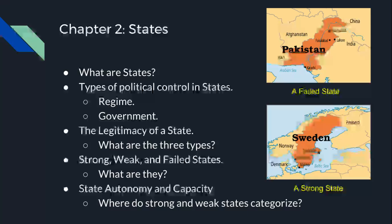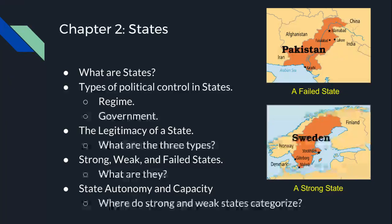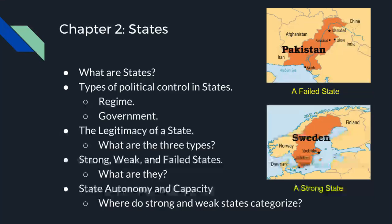When we get into the legitimacy of a state, it is the value whereby something or someone is recognized and accepted as right and proper. There are three different types: traditional, charismatic, and rational-legal. Traditional legitimacy is built by habit and custom over time, stressing history — like Queen Elizabeth II of the United Kingdom. Charismatic legitimacy is built on the force of ideas and the presence of the leader, like Vladimir Lenin of Russia. Rational-legal legitimacy is built on the rules, procedures, and the offices that create and enforce those rules, like President Donald Trump of the United States.